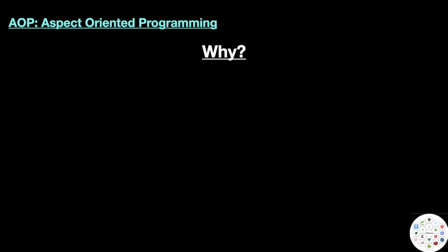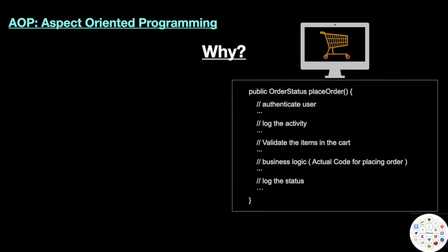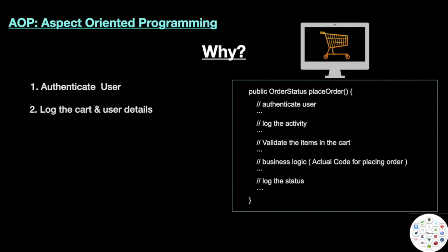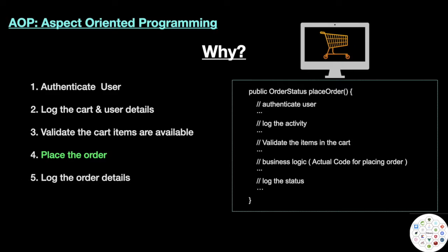To understand why we need AOP, let's take an example. Suppose you are building an e-commerce site where you can select an item and place an order. In the place order method, we first check if the user is authenticated, then log the activity that the place order method is going to execute, then validate that the items in the cart are available, and then run the actual business logic to place the order.